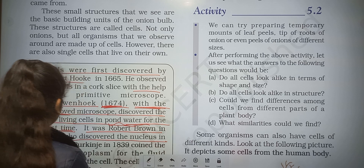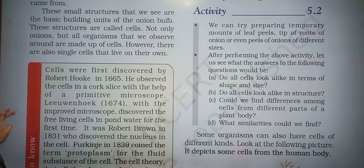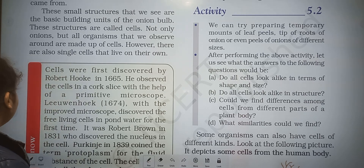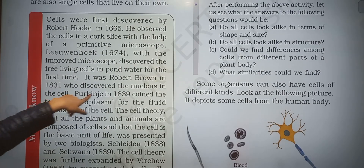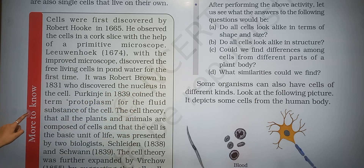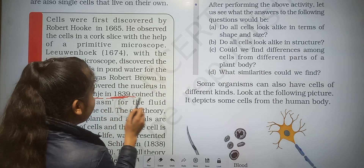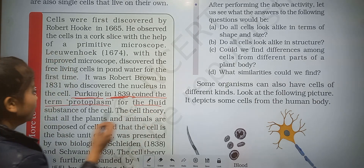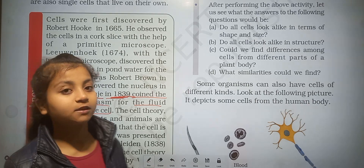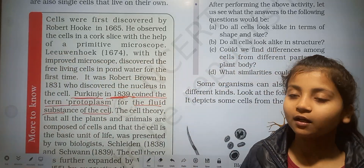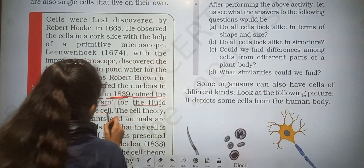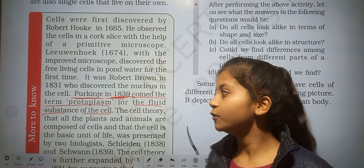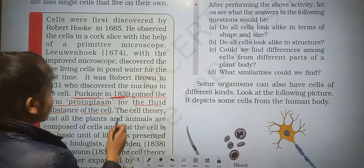It was Robert Brown in 1831 who discovered the nucleus in the cell. So we have three scientists: Hooke discovered the dead cell, Leeuwenhoek the living cell, and Brown the nucleus. Then Purkinje in 1839 coined the term 'protoplasm' for the fluid substance of the cell.